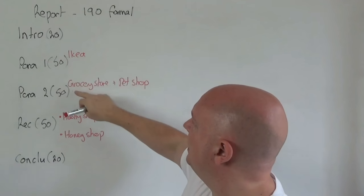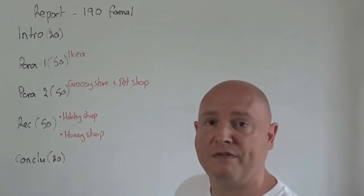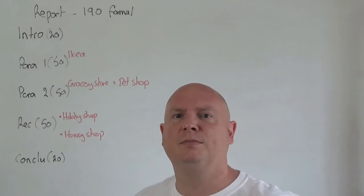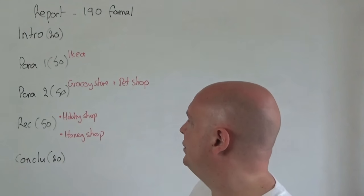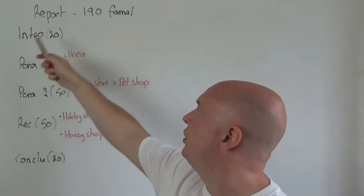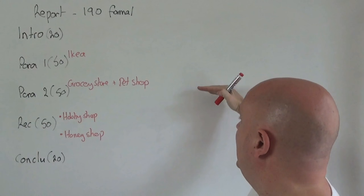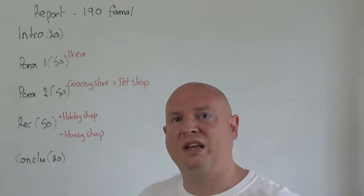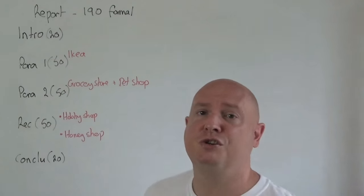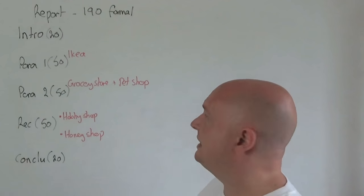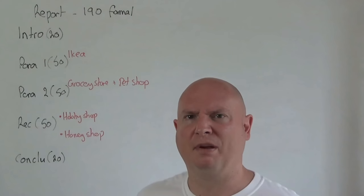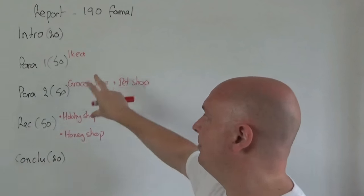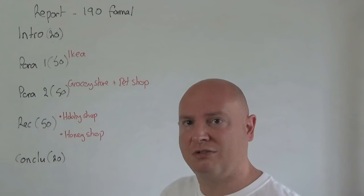I've also put my ideas into their respective paragraphs. I put IKEA with paragraph one. I decided to put grocery store and pet shop together because I want to say more about IKEA where I can really use some nice vocabulary. I put hobby shop and honey shop with my recommendations. Notice I haven't touched conclusion or introduction yet — do the big part first because that's what takes your creativity. Once you've got that, the conclusion and introduction should come very easily because you know what you're going to write. So the next thing we have to do is basically write an essay. I'm going to do it for some parts and then show you what I've done.